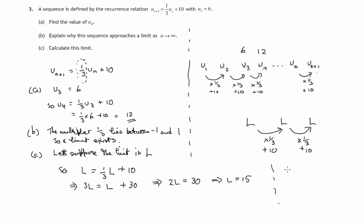Now you can double check that a third of fifteen plus ten, that's five plus ten. And yes we do, we get fifteen again. So if we've reached the number fifteen, doing this calculation again and again will just produce the same number fifteen. We will have reached this limit L. So the limit is fifteen.